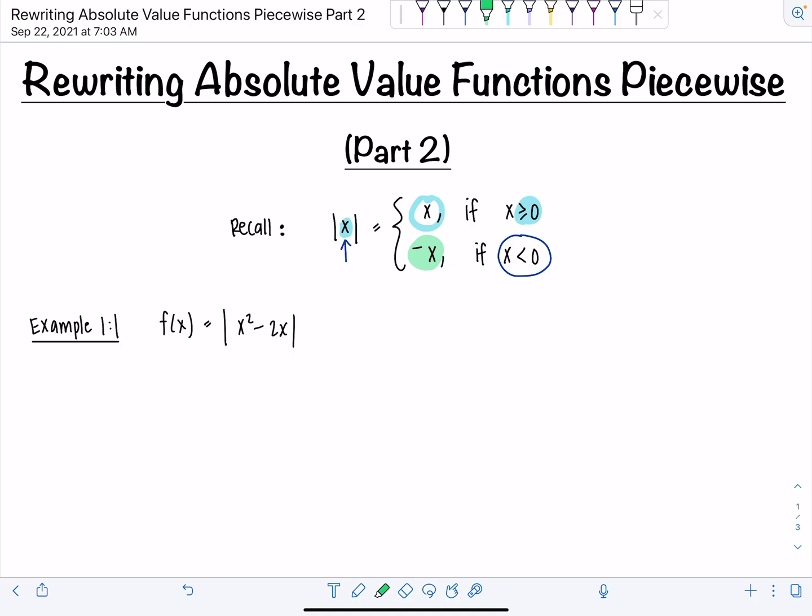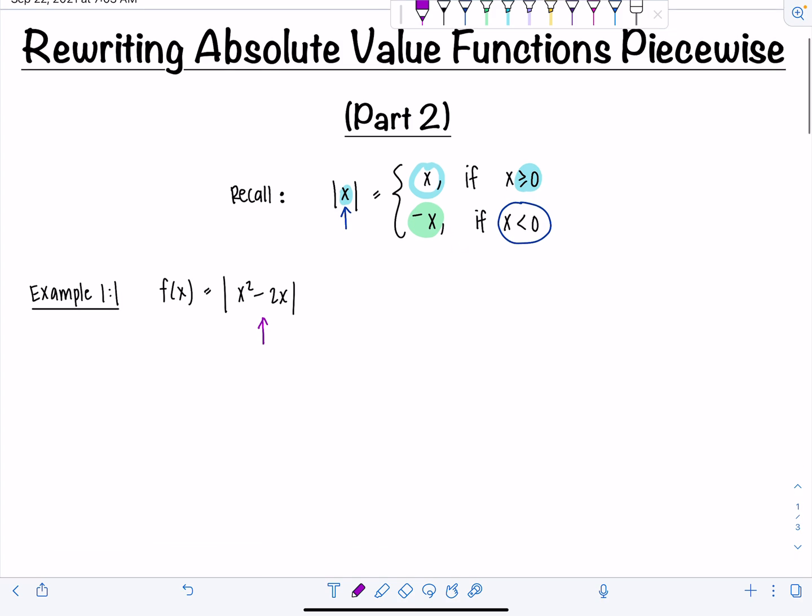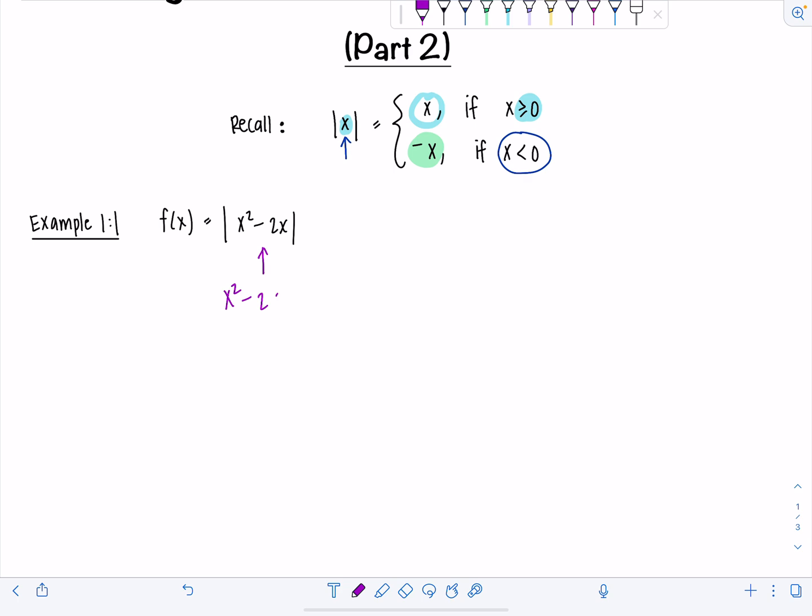First example: we have f(x) equals the absolute value of x squared minus 2x. So the quantity inside is a quadratic function. We can think of the graph of a quadratic function, maybe visualize it in our head, it's a parabola. And what I'm interested in finding out are where the quantity inside the absolute value is equal to zero. So to start, I'm going to set x squared minus 2x equal to zero.